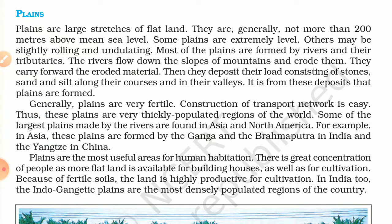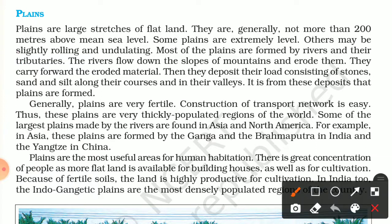Note this important point: plains are formed by rivers and their tributaries. Rivers flow down the slopes of mountains and erode them. They carry the eroded material — stones, sand, and silt — along their course and deposit them in their valleys. That is how plains are formed.